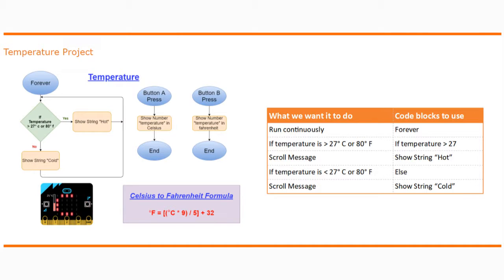Our program should run continuously, meaning it should constantly be checking what the current temperature is. We'll do this by using a forever block in our MakeCode environment. We'll then need to use a condition, which is an if statement. If the temperature is greater than 27 degrees Celsius or 80 degrees Fahrenheit, we're going to scroll the message "hot". Otherwise, we'll use our else block and scroll the message "cold" if the temperature is equal to or less than 27 degrees.